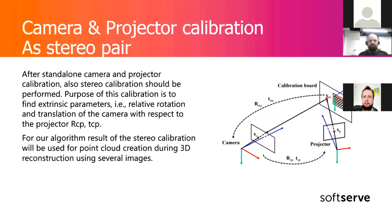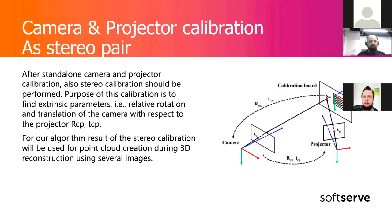In the end we also need the stereo calibration parameters — mainly the rotation and translation vectors — which describe our projector's rotation with respect to the camera. We can then use them for point cloud generation from the depth map. For depth maps in our algorithm, stereo calibration is not strictly required, but for other algorithms involving triangulation — as Yuri was discussing — it is required.